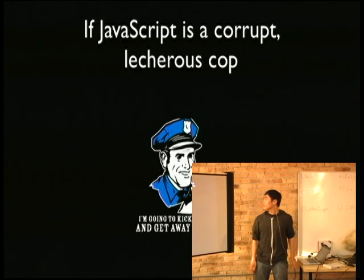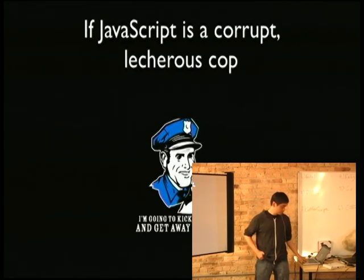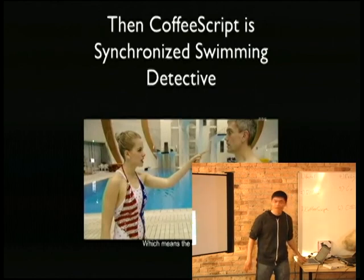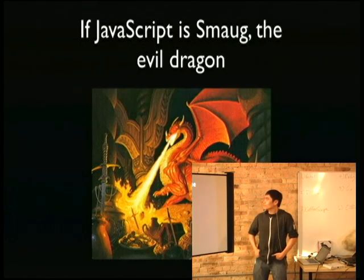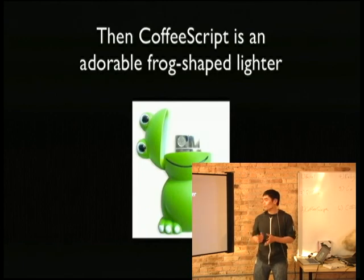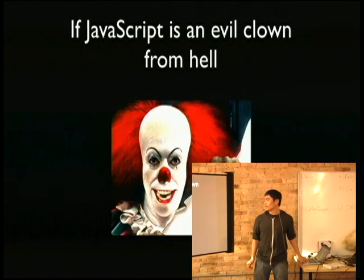If JavaScript is a corrupt, lecherous cop, then CoffeeScript is a synchronized swimming detective. That might be a little obscure. If JavaScript is Smaug the evil dragon, then CoffeeScript is an adorable frog-shaped lighter. So I went overboard with these analogies, and they basically just keep going on and on.